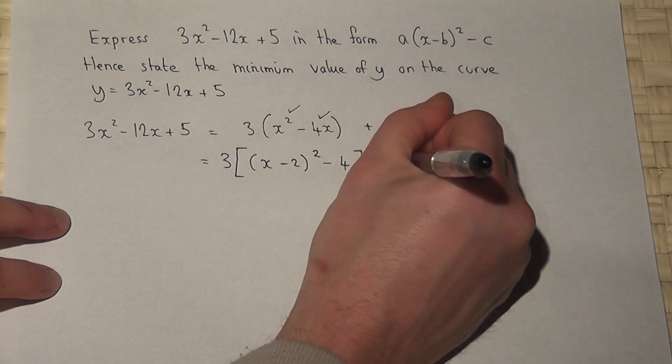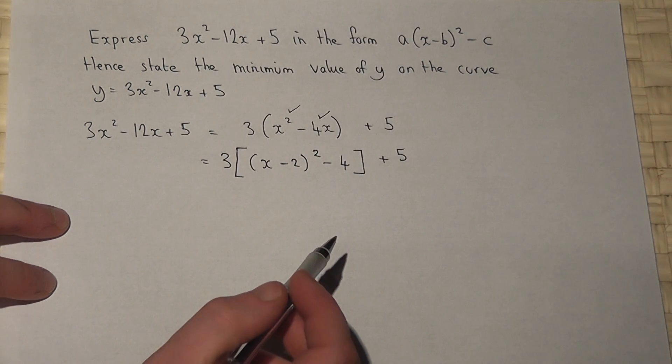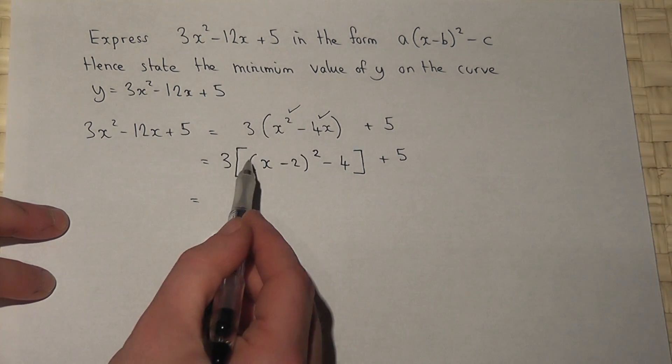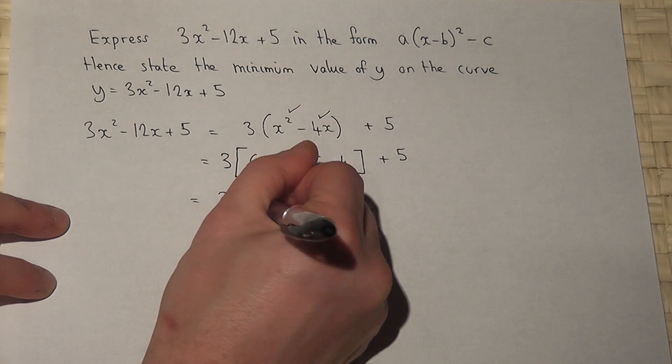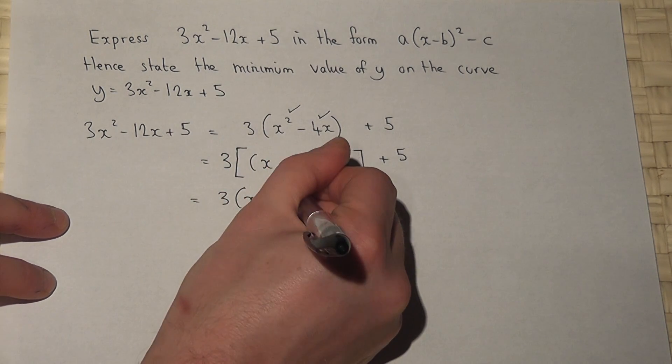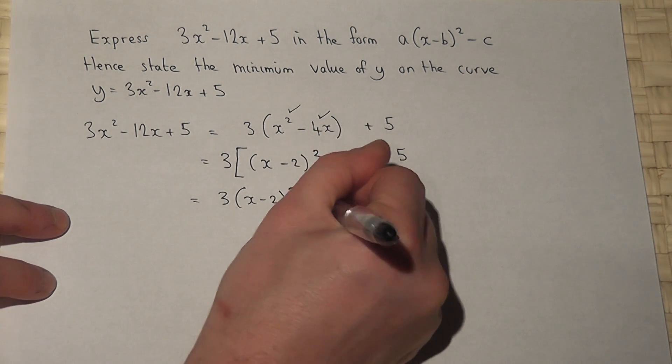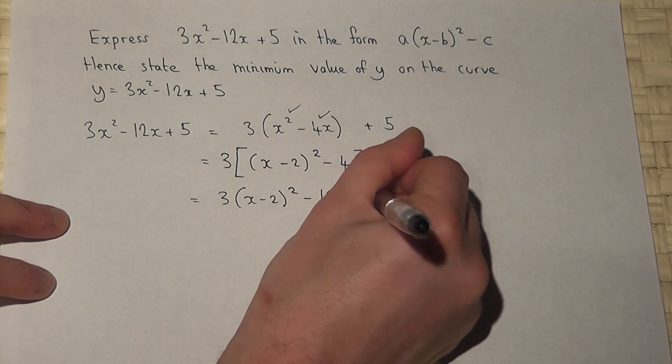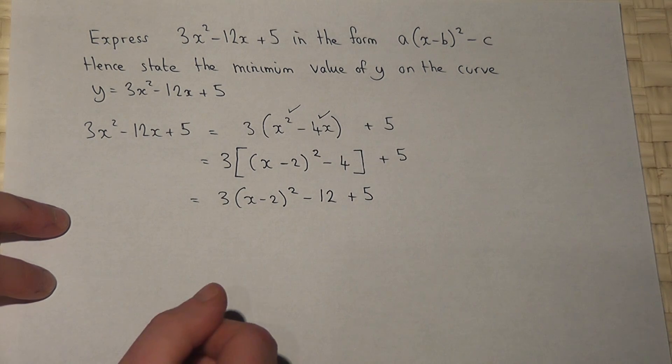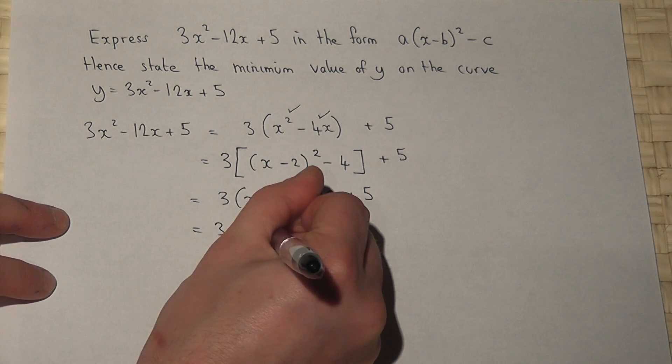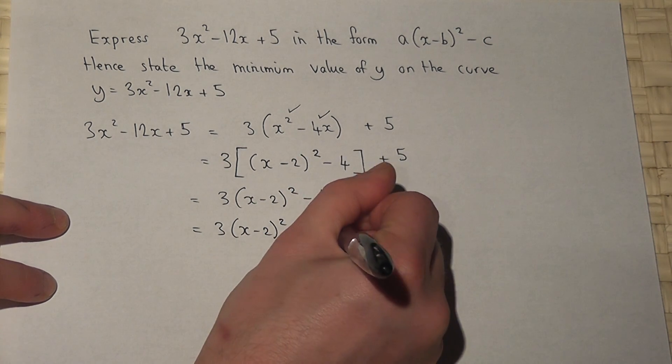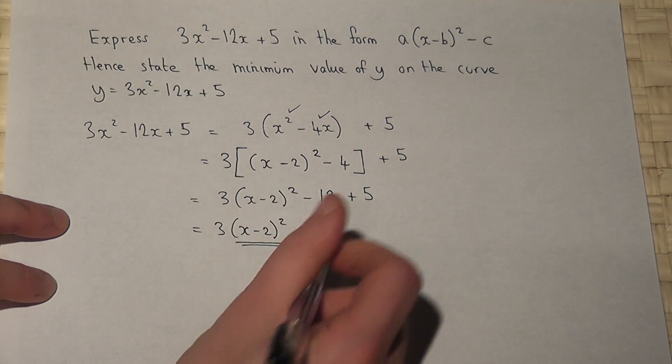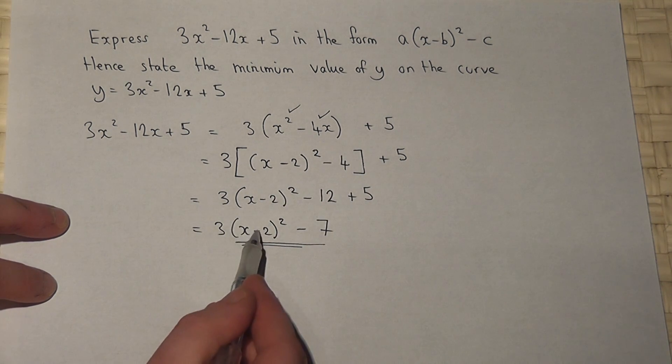There's also a plus 5 on the outside. If I now times the terms in the bracket by 3, I get 3, bracket x minus 2 squared, and 3 times minus 4 is minus 12. There's also the plus 5. So this just equals 3(x - 2)² - 7. I have therefore written it in the form a(x minus b) all squared, take away c, as required.